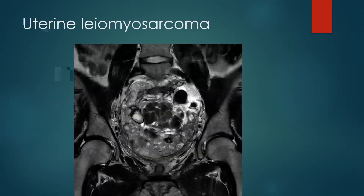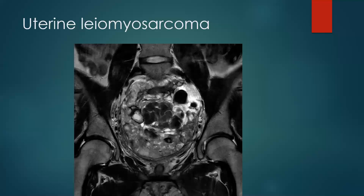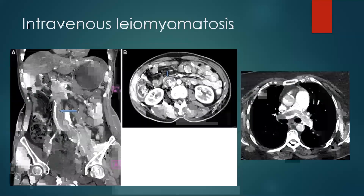I'm going to show some examples of the differential diagnoses. Leiomyosarcoma, as seen in this image, shows more heterogeneous signal intensity and is classically invasive. Intravenous leiomyomatosis is a variant of leiomyoma that extends intravascularly and can travel all the way up to the IVC, causing either bland or tumor thrombus.